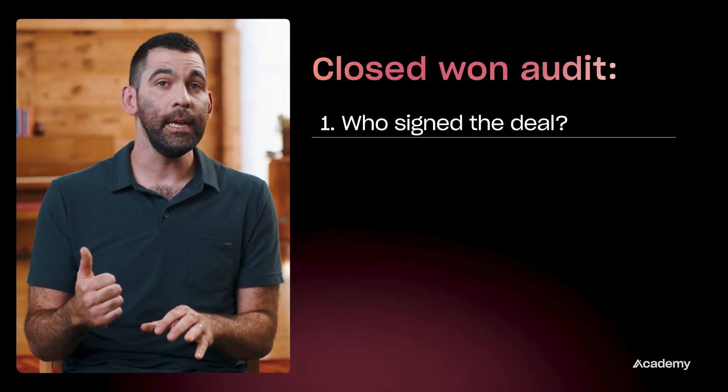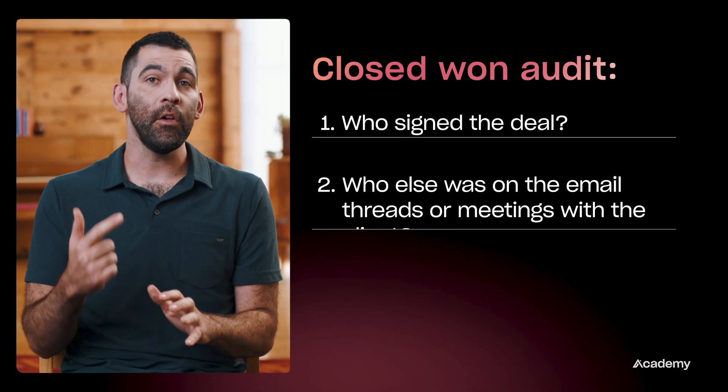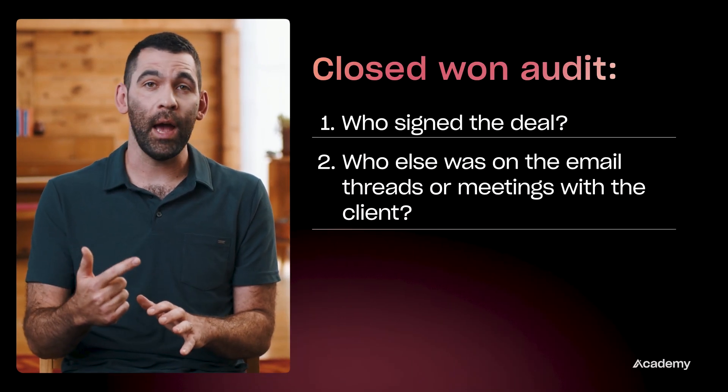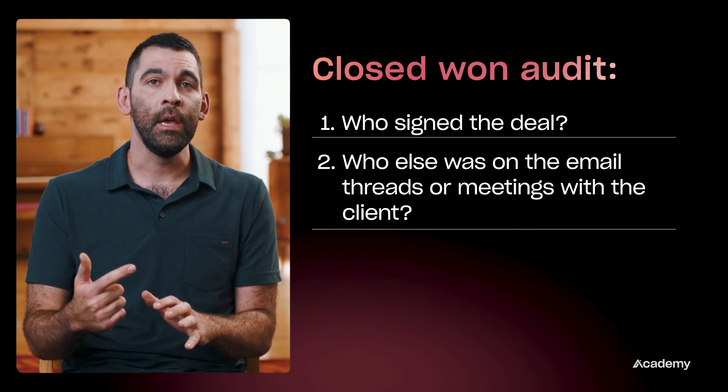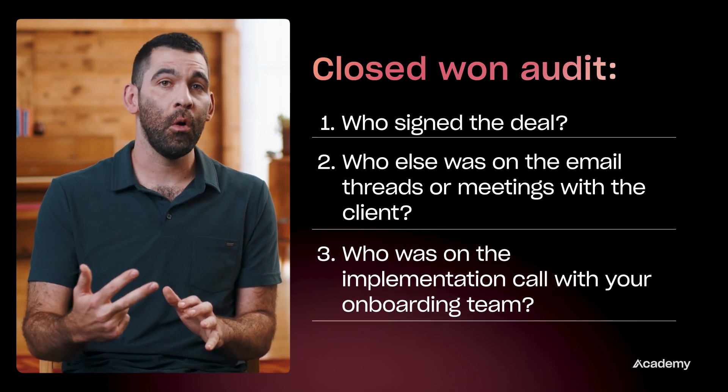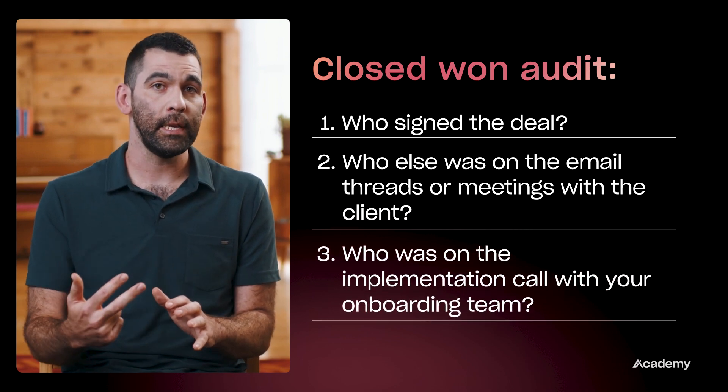So the first thing you want to do is audit every single closed-won deal your team brought in for the last two quarters and find who signed it, who else was on the email threads or the meetings you had with the client, and who was in the implementation call with your onboarding team.